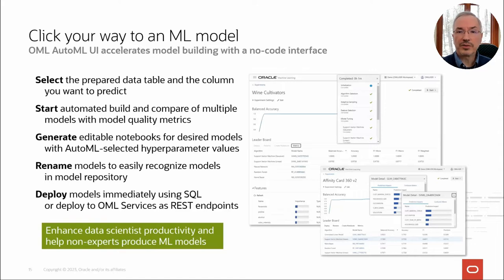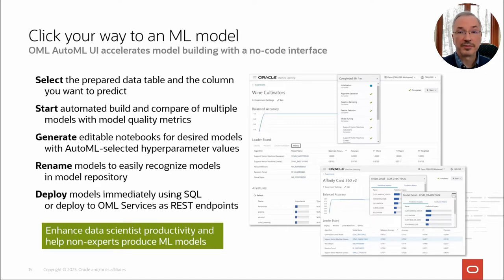Not everyone wants to write code, so OML allows you to click your way to a model. Using the AutoML UI no-code interface, you can build models with minimal input — just specify the data and the target in what's called an experiment, and the tool does the rest. With a few clicks, you can generate editable starter notebooks containing Python code using OML for Py, including the settings AutoML chose. You can rename models for easier recognition, and deploy models to OML Services.